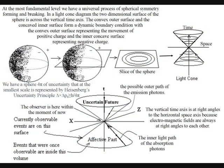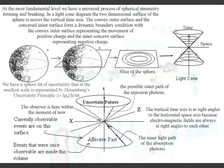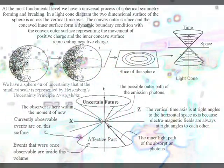The top part of the light cone represents the possible outer path of the emission photons. With this information we can see that the apex of the light cone must represent a process of energy exchange in the form of photon absorption and emission.